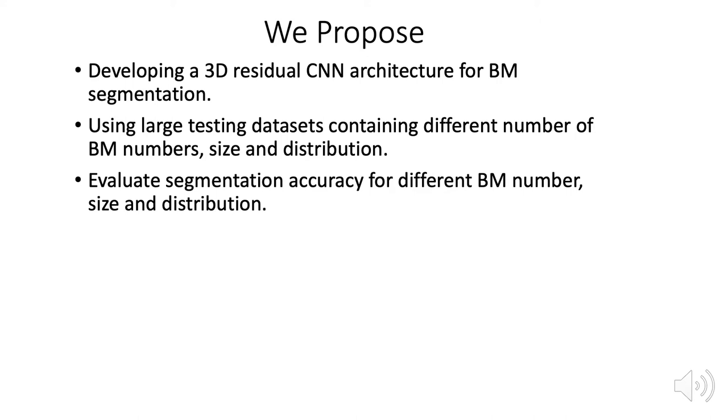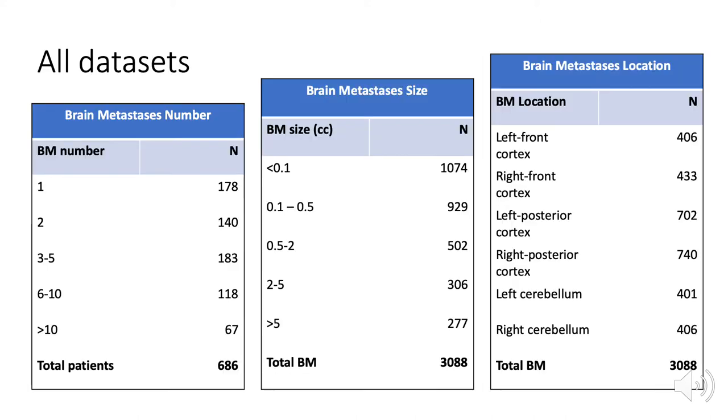Let's look at the dataset. This is the whole dataset. We have 686 patients and we have around 3,000 brain masses in their brain. Actually, this is not the whole dataset. This is the cleanest one we have right now, and it focuses on the first-time treatment.